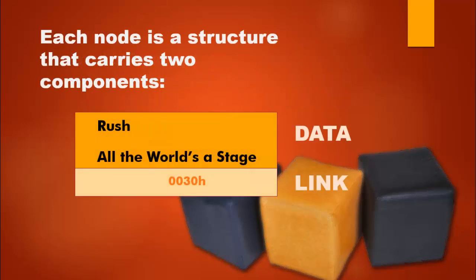Each node is made up of two parts: the payload, or data portion, and the link portion. The link portion is going to be a pointer of the node data type. The data type of the payload can be anything you want. The link, however, must point to a very specific data type.